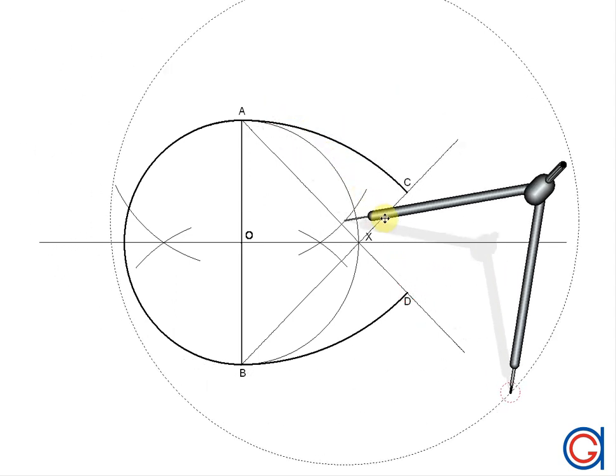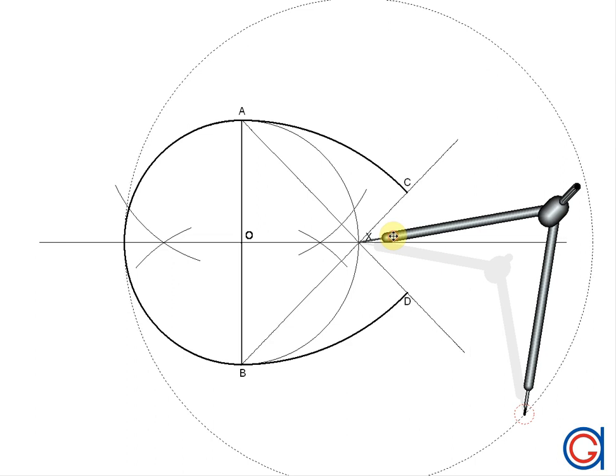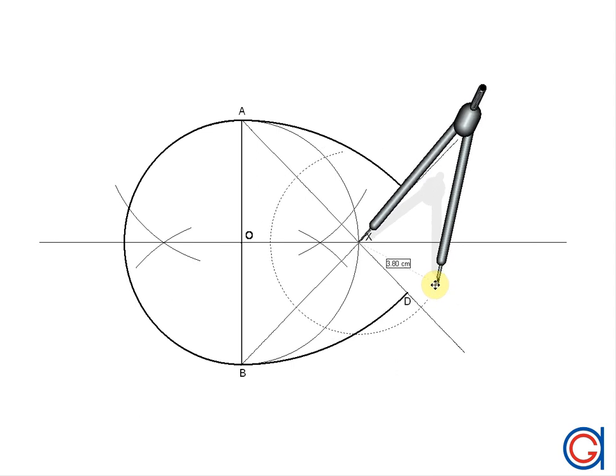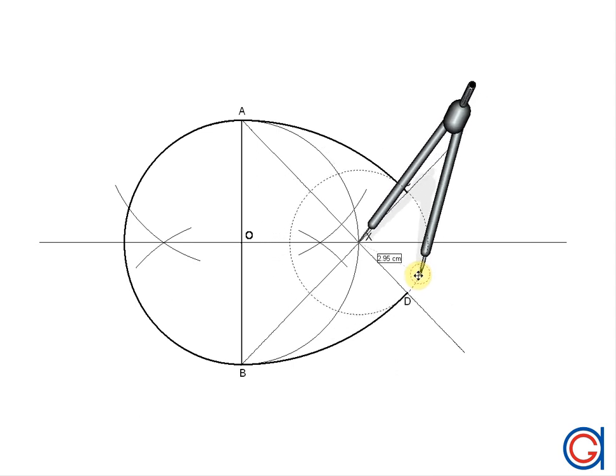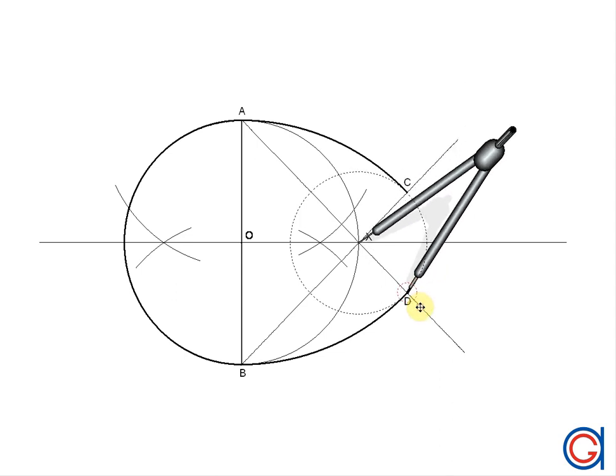And finally, to complete the ovoid, we set our compass on point X and with the radius XD, we describe an arc to join points D to point C.